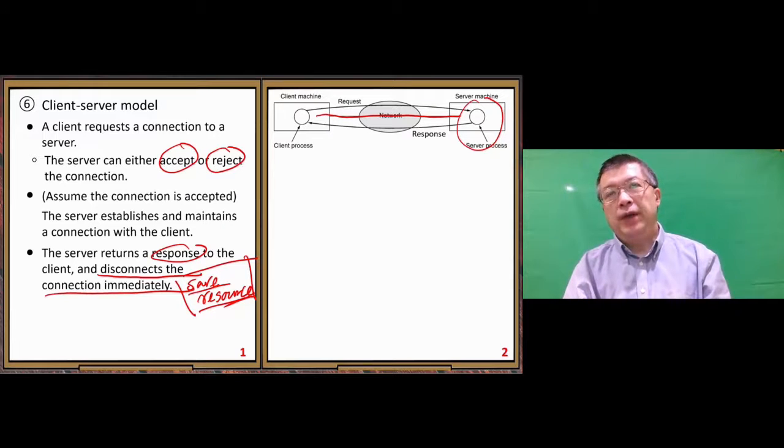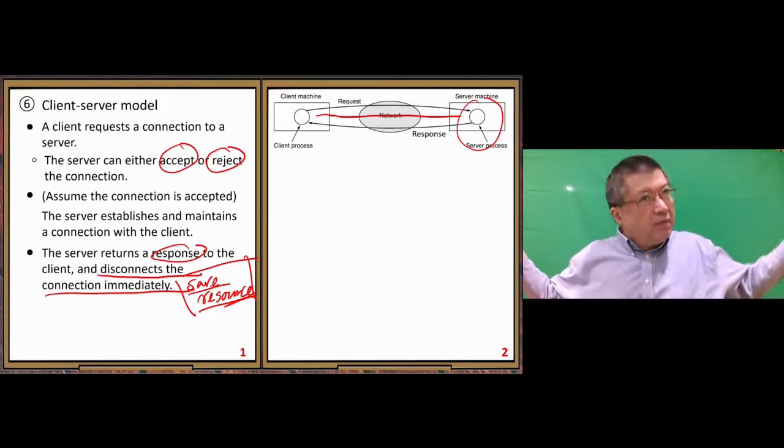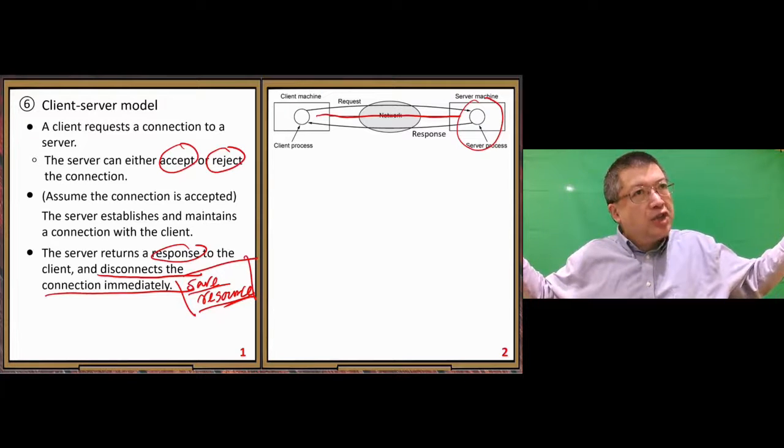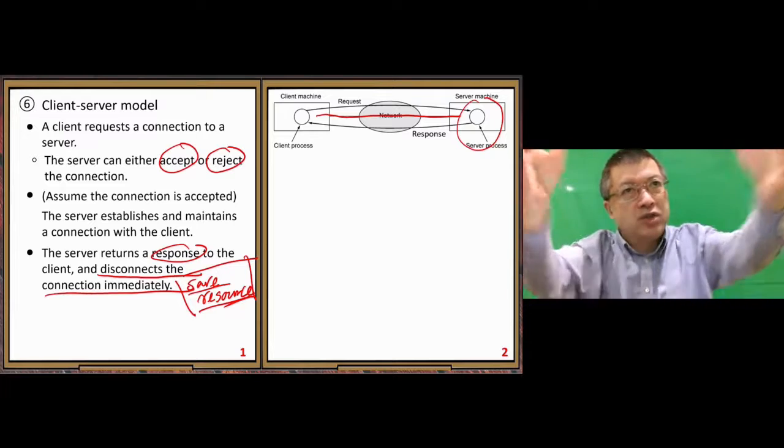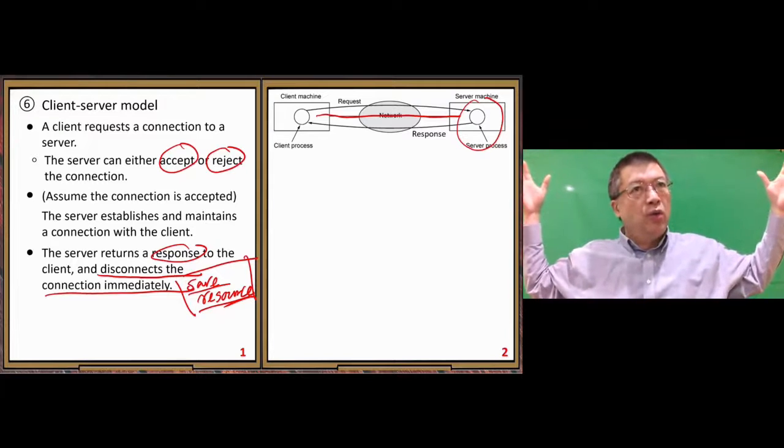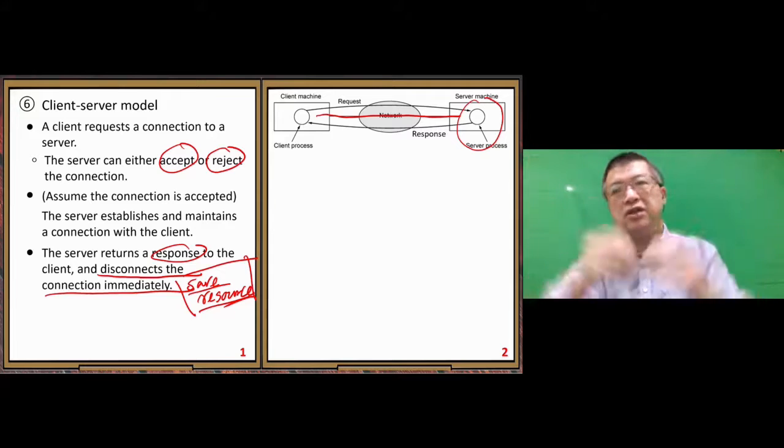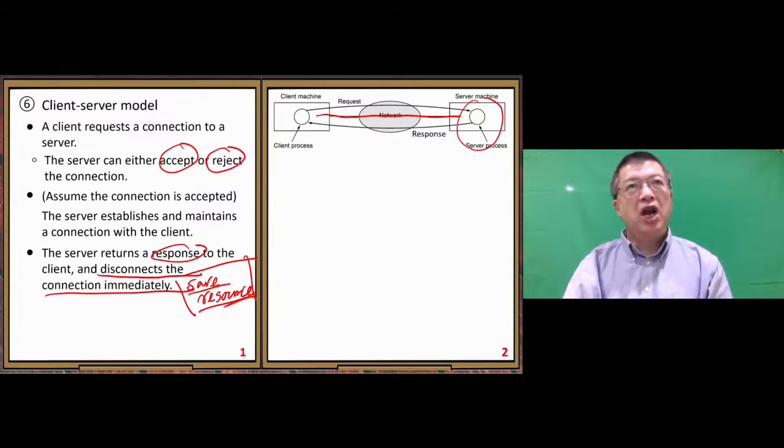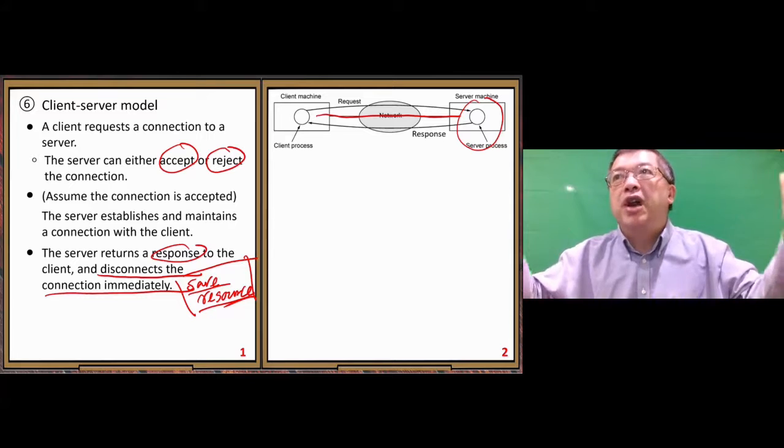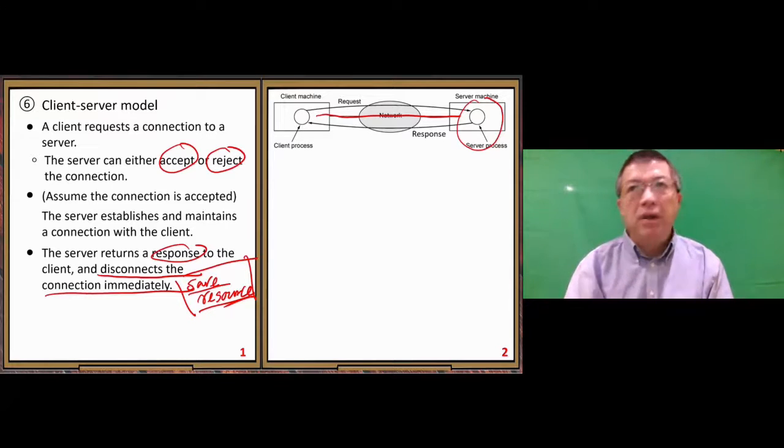Each connection takes up a certain amount of memory space in the server. But you can imagine there could be a large number of clients sending requests to one server simultaneously. Each client needs a connection object. Then inside the memory of the server there are a large number of connection objects using a lot of memory.